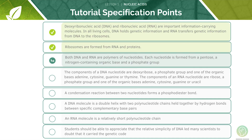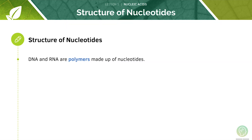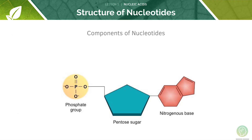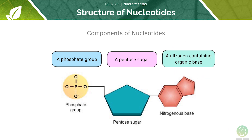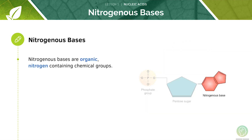We will now look at nucleotide structures. DNA and RNA are polymers made up of nucleotides — this is why we class them as nucleic acids. Every nucleotide is made up of three main components: a phosphate group, a pentose sugar, and a nitrogen-containing organic base. Nitrogenous bases are organic nitrogen-containing chemical groups.